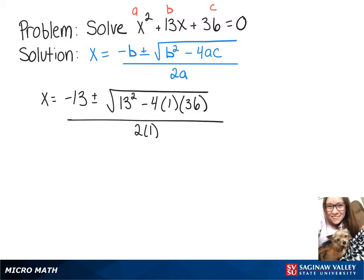Simplifying that will give us negative 13 plus or minus the square root of 169 minus 144 over 2.